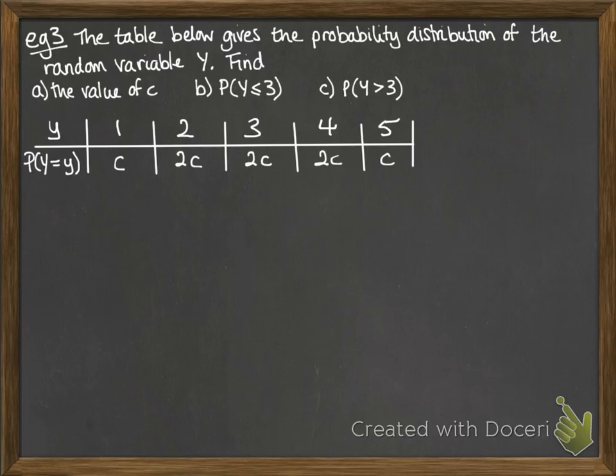OK. Another way that we could be asked this sort of topic is in this following way. So the table below gives the probability distribution of a random variable Y, and they can use any letter they like. Find, firstly, the value of c, then the probability that Y is less than or equal to 3, and finally the probability that Y is greater than 3. So we've got this table underneath. So for the first one, we want the value of c. We know that all of those probabilities have to add up to 1. So that means 8c equals 1, so c is 1/8.